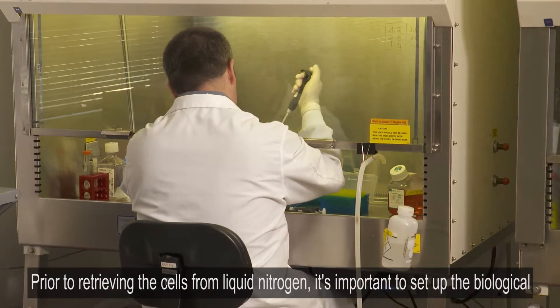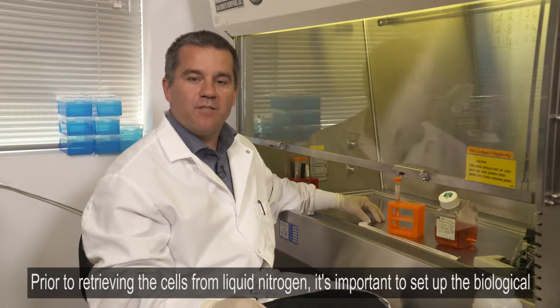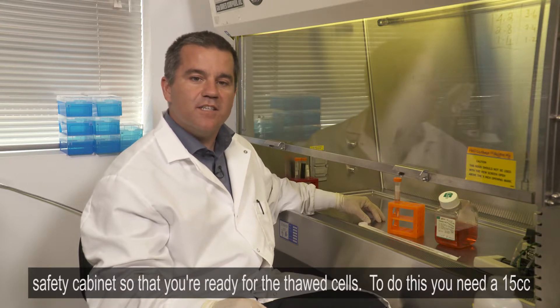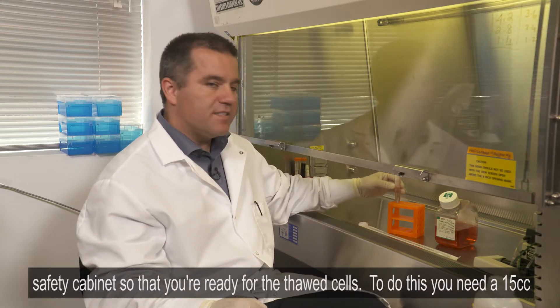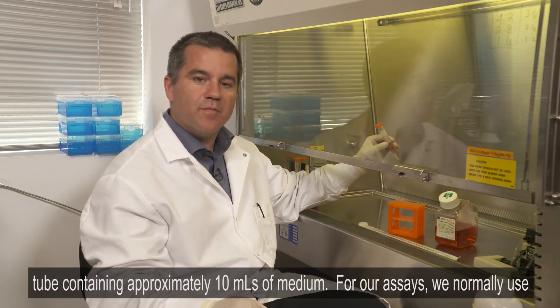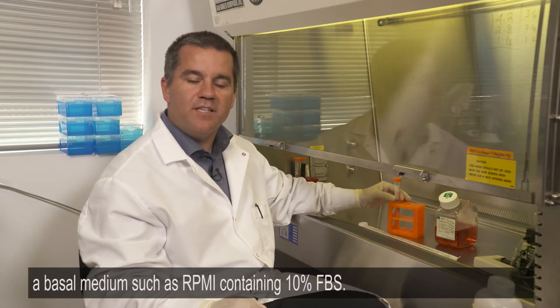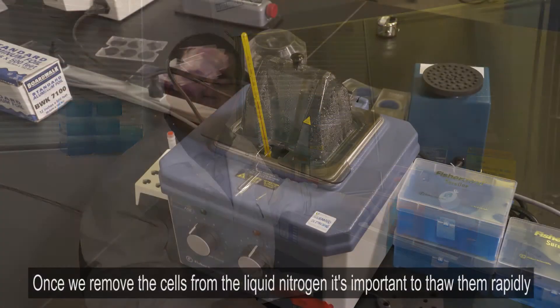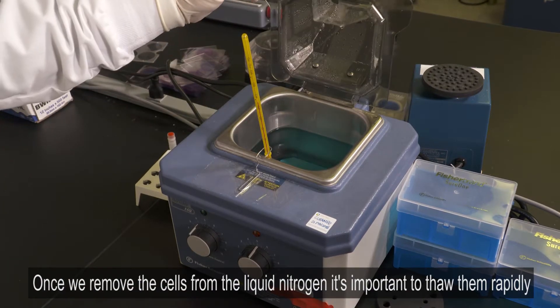Prior to retrieving the cells from liquid nitrogen, it's important to set up the biological safety cabinet so you're ready for the thawed cells. To do this, you need a 15cc tube containing approximately 10 mils of medium. For our assays, we normally use a basal medium such as RPMI containing 10% FBS.